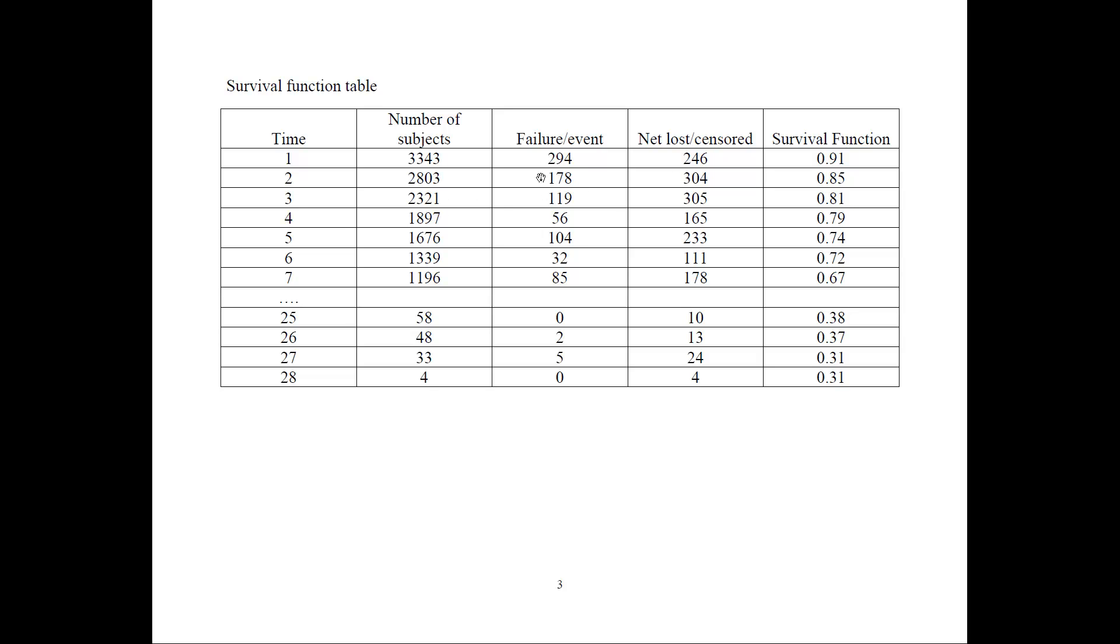And same thing, here we have 178 failing. This would mean a hazard rate of 178 divided by this. The survival function would be the hazard rate that I just mentioned, this number divided by this. 1 minus that times this survival function, and that would be 0.85, and so on.